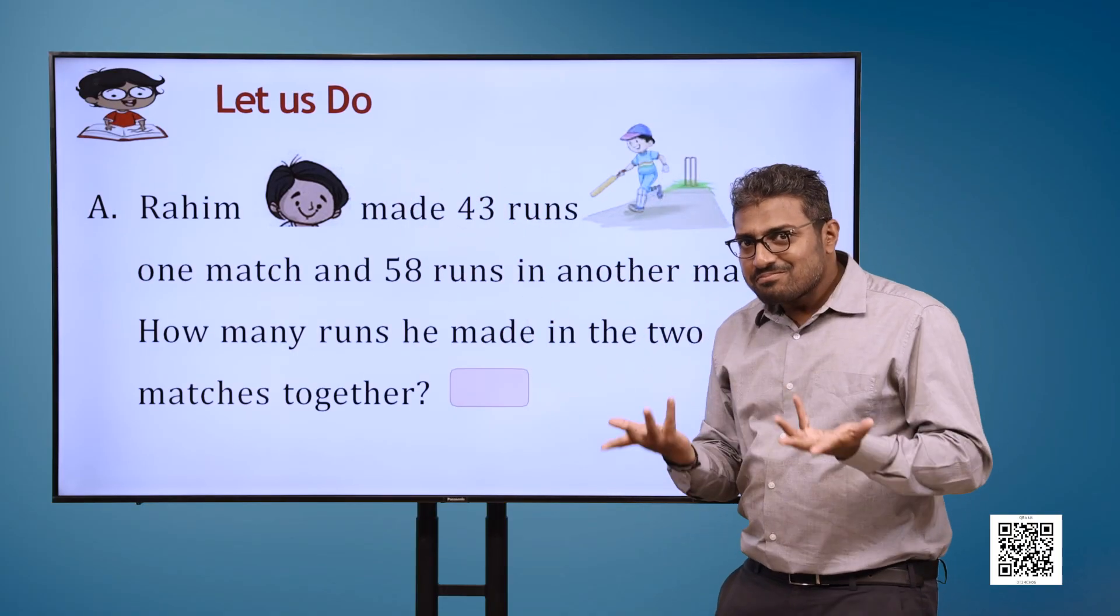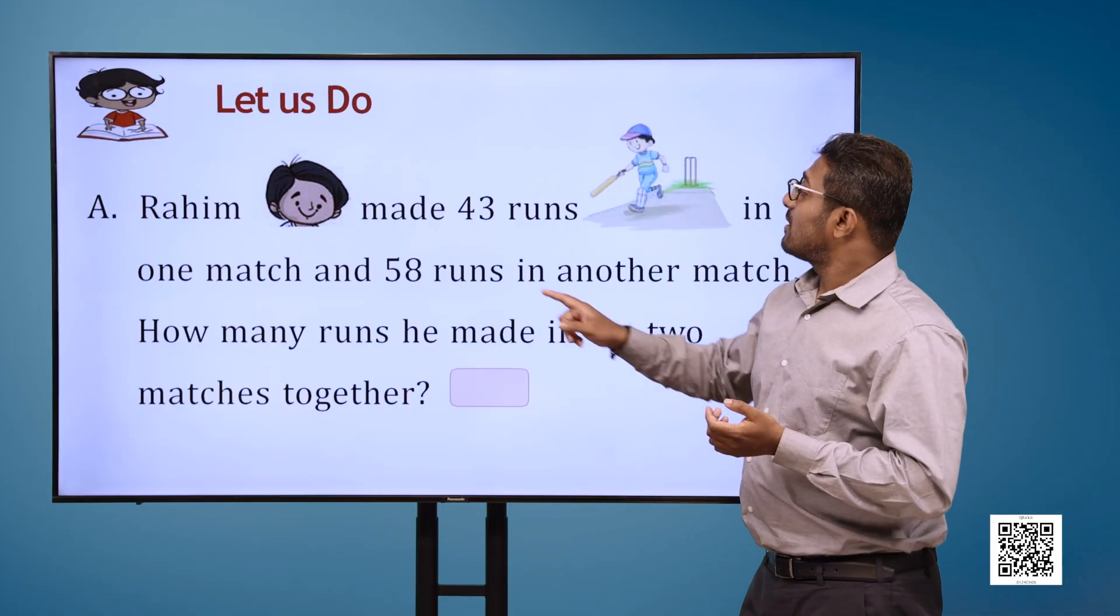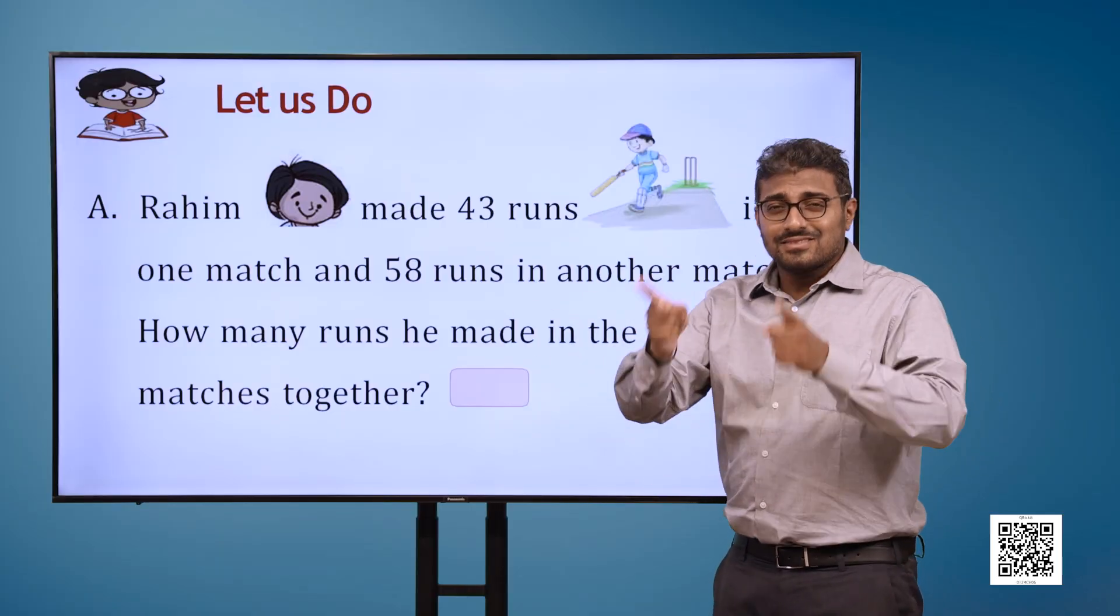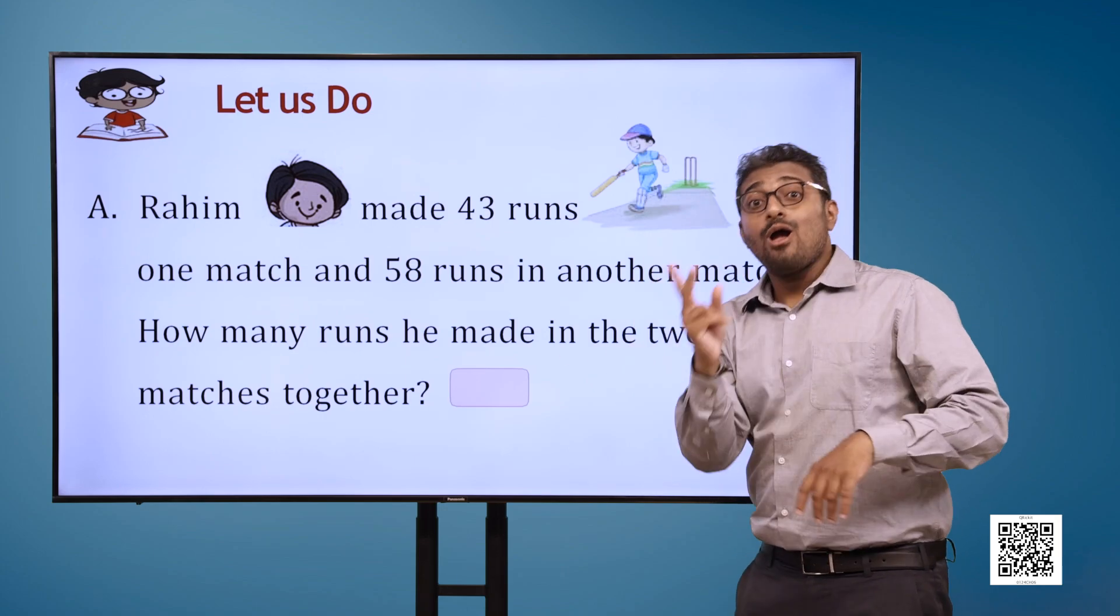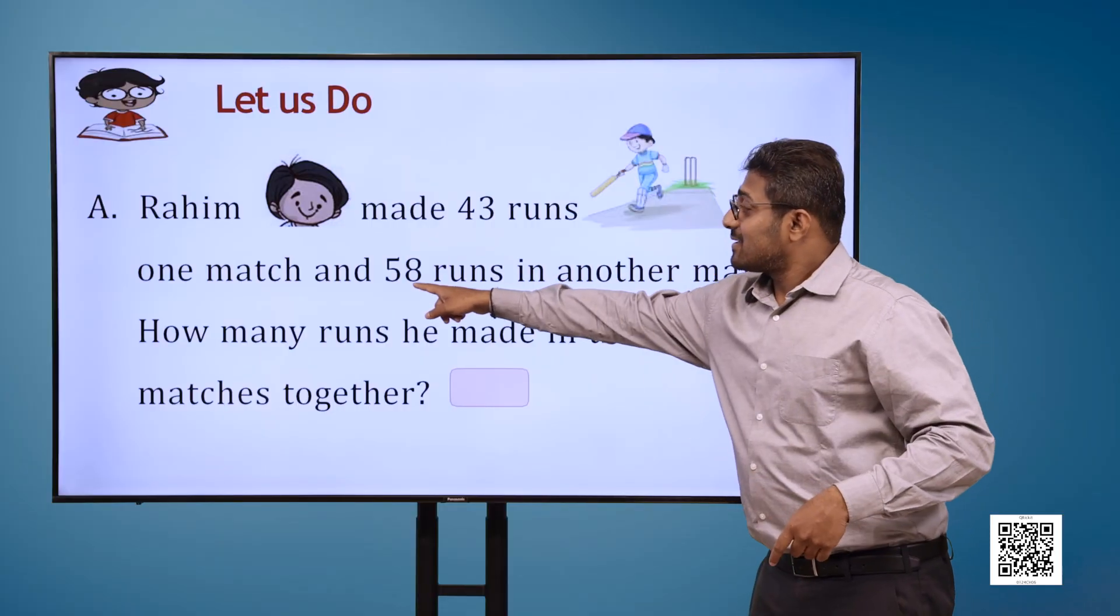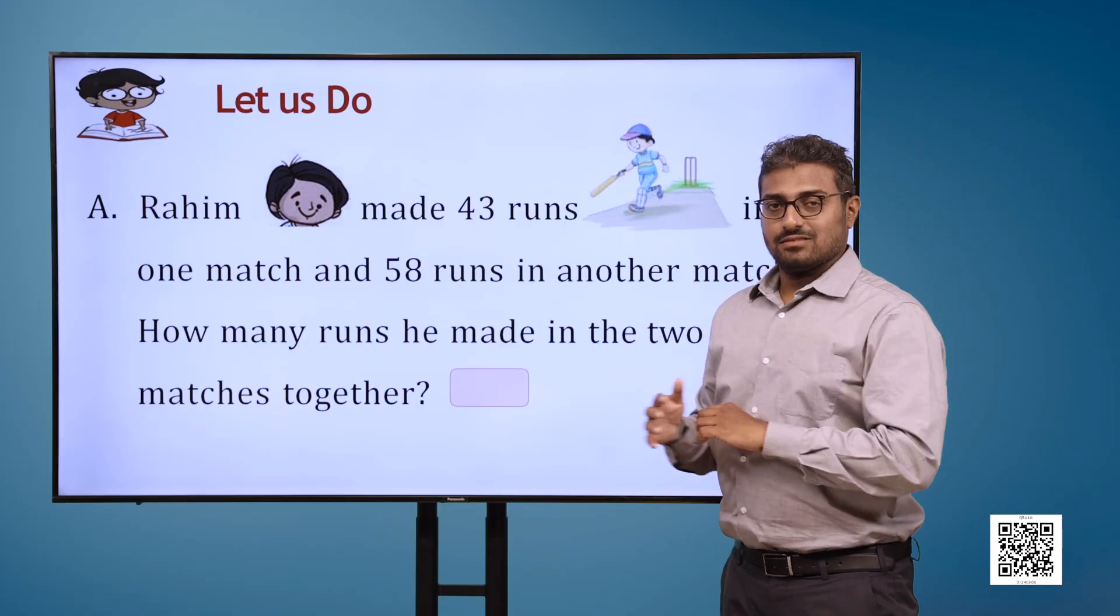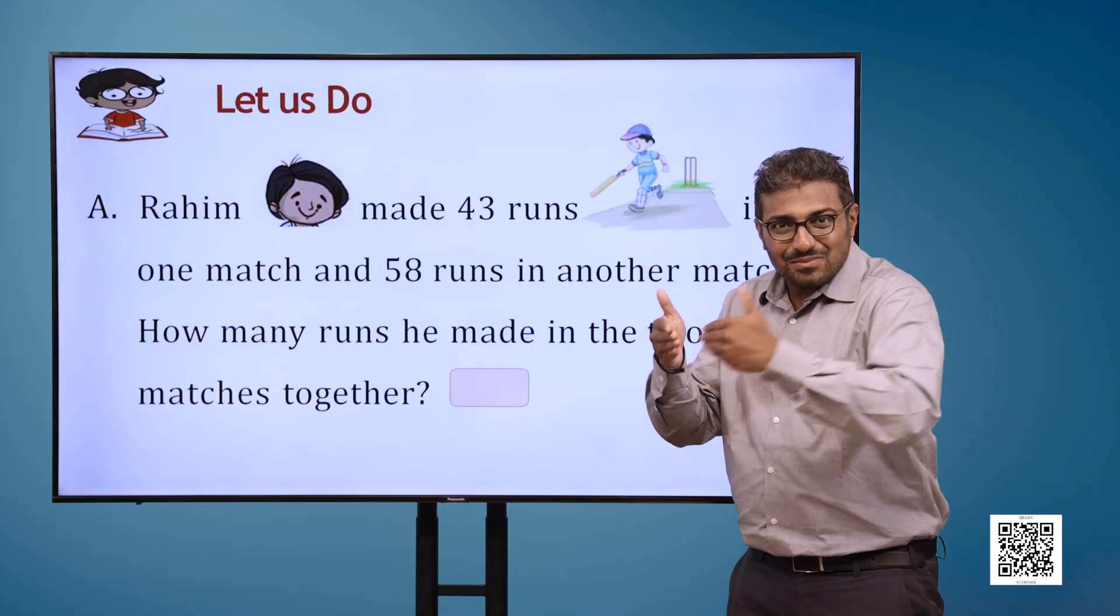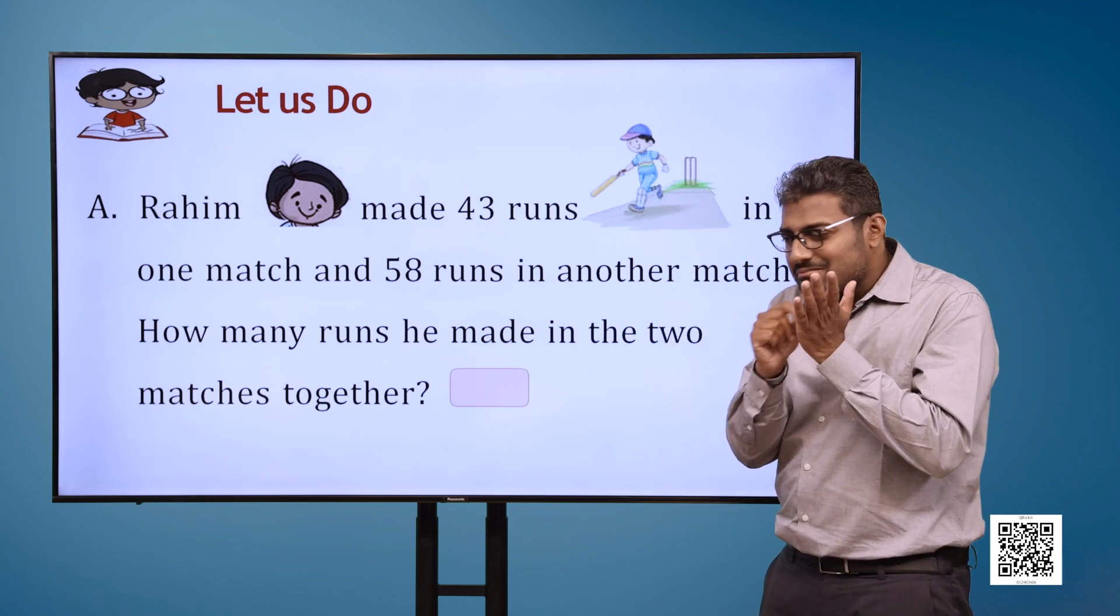Let us do. A. Raheem made 43 runs in one match and 58 runs in another match. How many runs he made in two matches together?